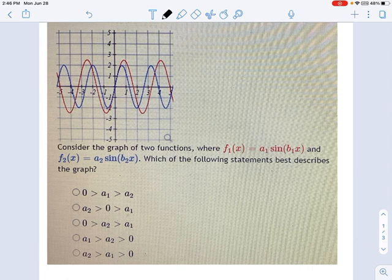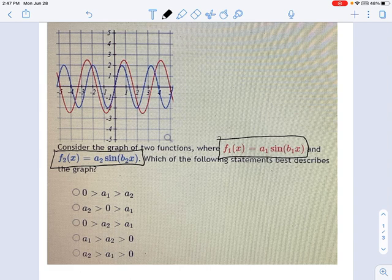The red one is a1, that's this right here, a1 times sine of b1 times x, and the blue one is a2 times sine of b2 times x. And the question is, which of the following statements best describes the graph?